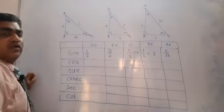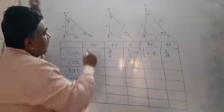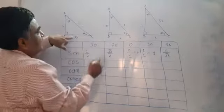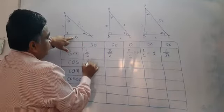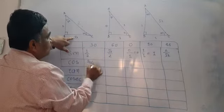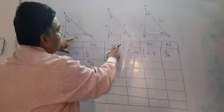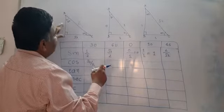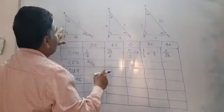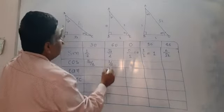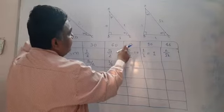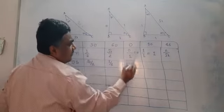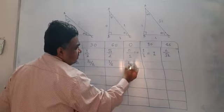Now go for cosine. Let's see cos 30 — adjacent side upon hypotenuse. The value works out to 1 upon 1, which becomes 1.